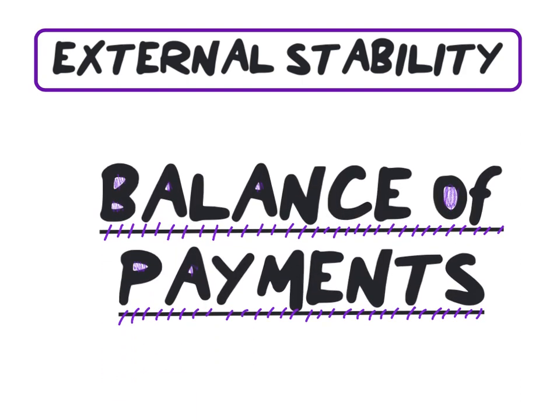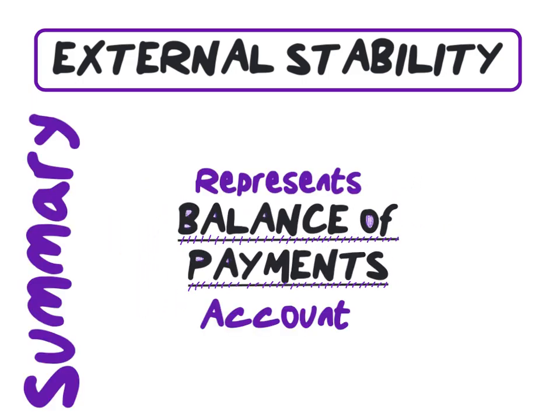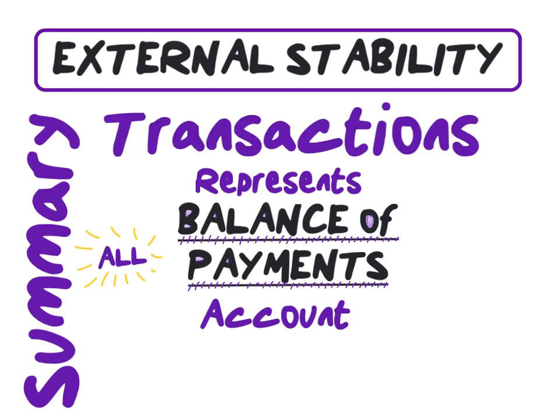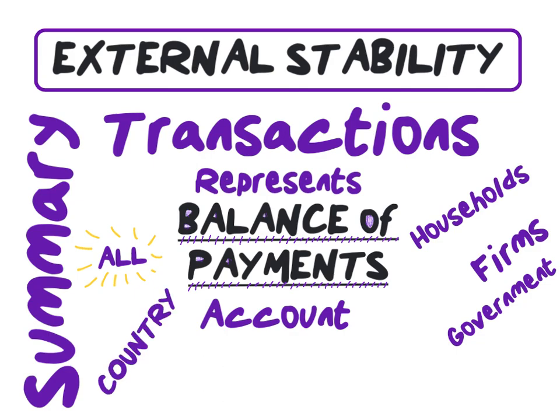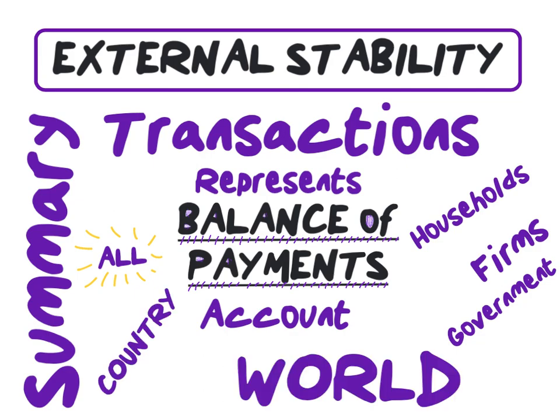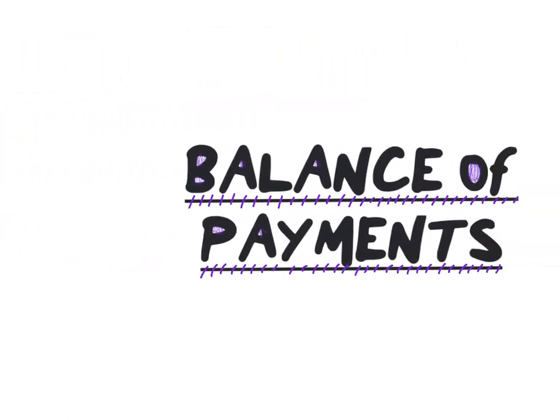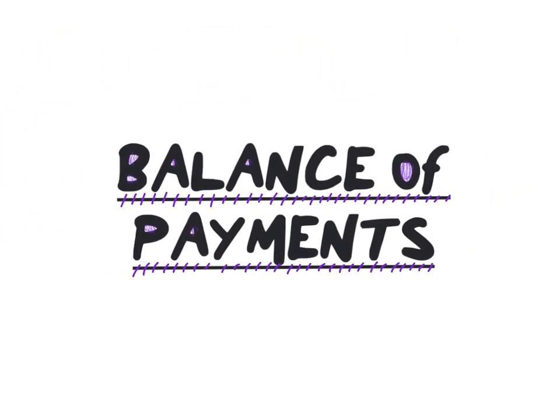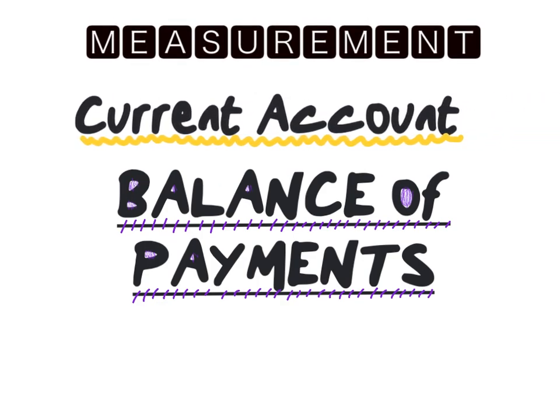Our next objective: external stability. Each country forms part of the global economy. The inclusion of the foreign sector enables us to study the link between the rest of the world. In order to measure external performance, we will look at our balance of payments. The balance of payments account represents a summary of all transactions by our households, firms, and government within the economy, but also with the rest of the world. The balance of payments consists of two separate accounts: our current account and our financial account.